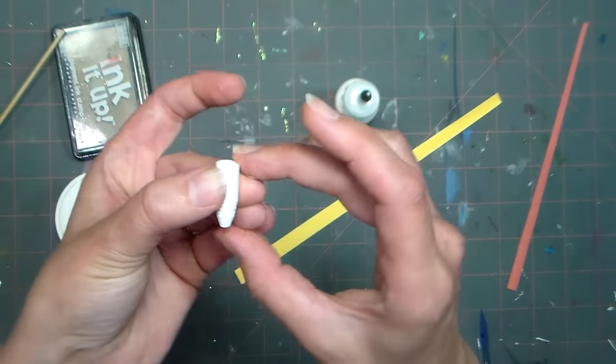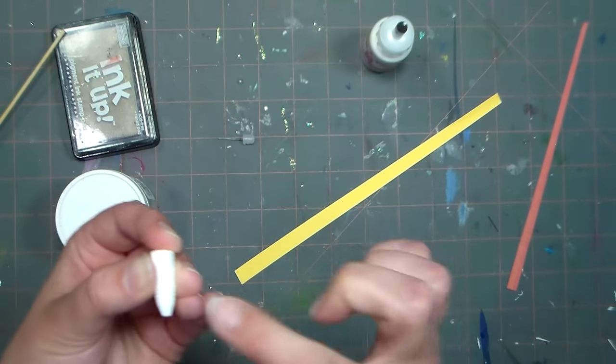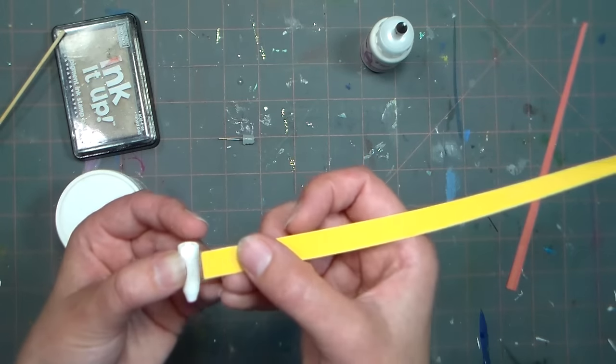After you've held that just for a second, the glue grabs really quick. You could also use Elmer's glue or whatever white glue you like. I'm going to add a little glue there, and I am going to add my next strip, which is the yellow.